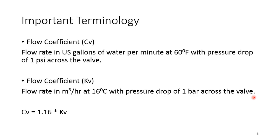The flow coefficient Cv is very important — it is the valve capacity: the number of gallons of water that flows through the valve at 60°F with a pressure drop of 1 PSI across the valve. An alternate terminology is Kv: the flow rate in cubic meters per hour at 16°C with a pressure drop of 1 bar. They are correlated: Cv = 1.16 × Kv.